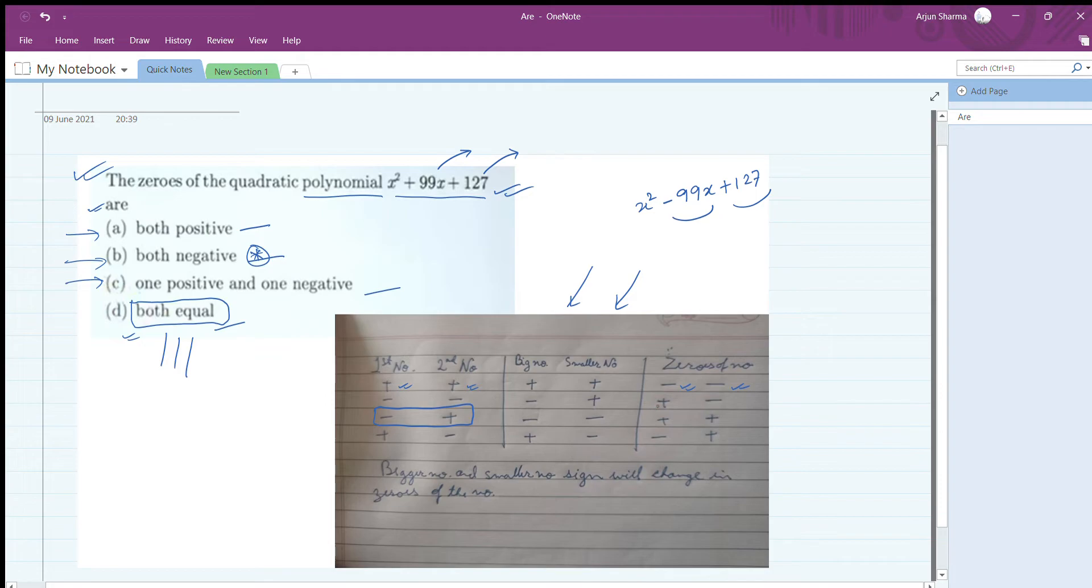If it is x² + 99x - 127, the last term is negative. So the first number is positive, second number is negative. First positive, second negative, so the bigger number will determine whether it is positive or negative.